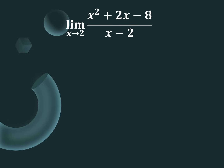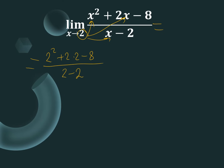For the second example, the first step is to substitute x equals 2 directly. We get 2 squared plus 2 times 2 minus 8 over 2 minus 2. Evaluating: 4 plus 4 is 8, and 8 minus 8 is 0, over 0 — so we again have 0 over 0, which is undefined. We cannot evaluate this fraction directly.